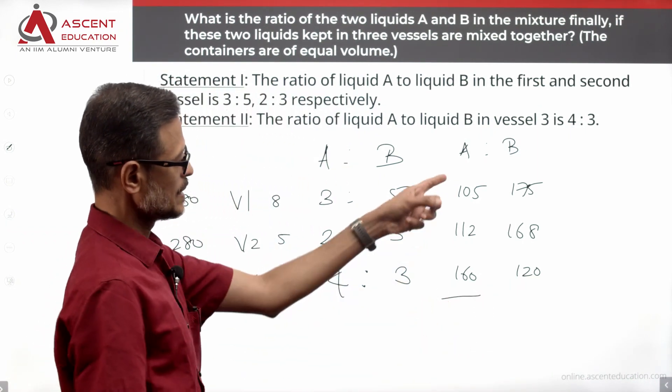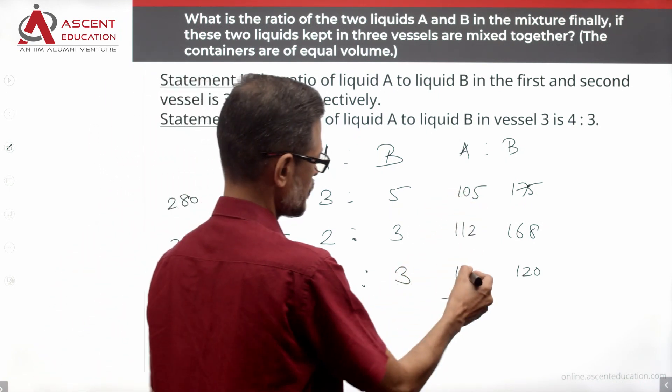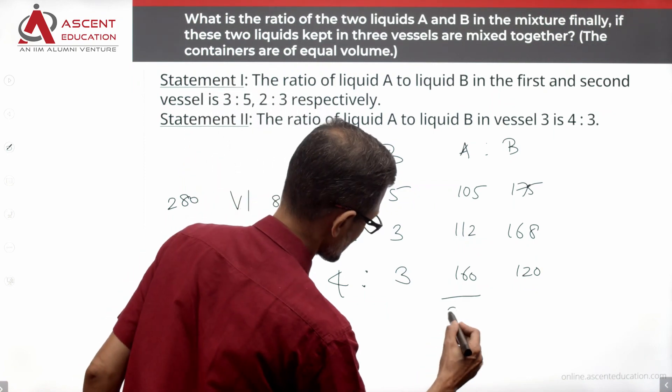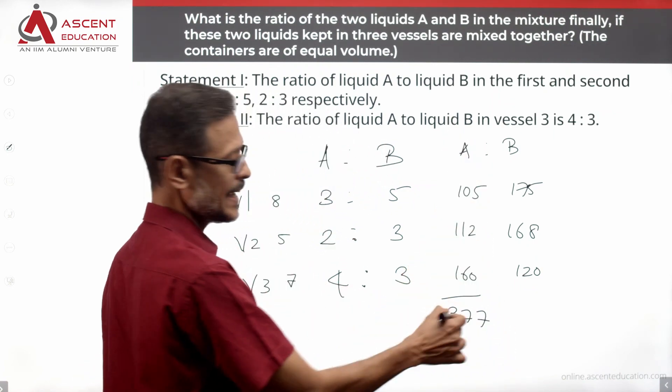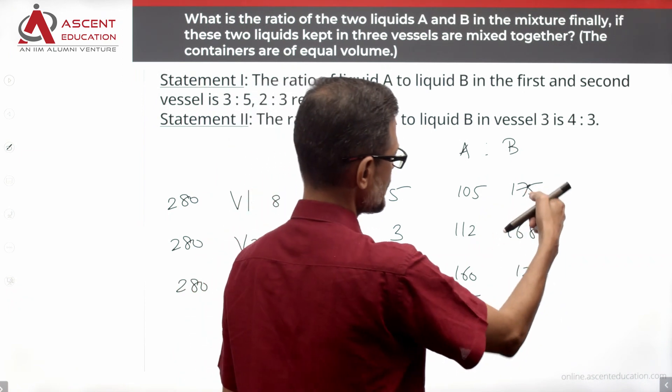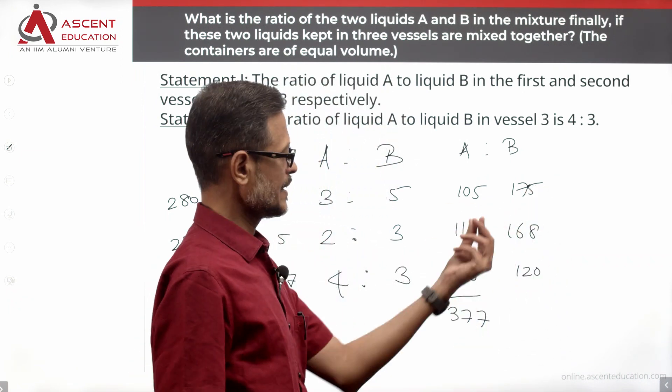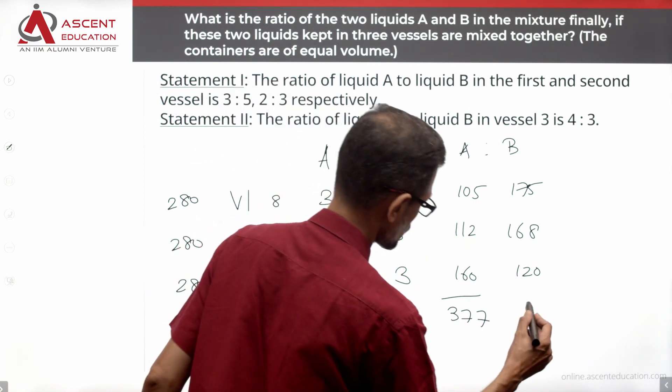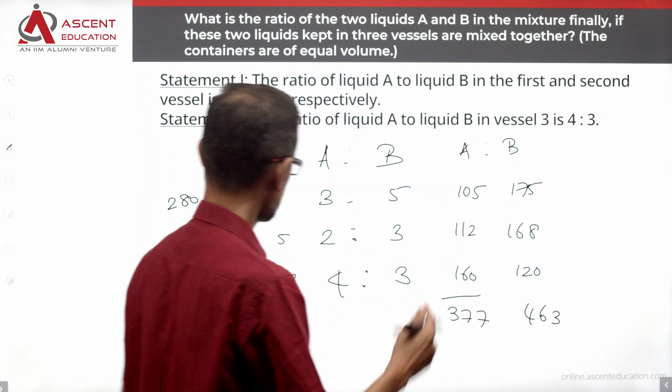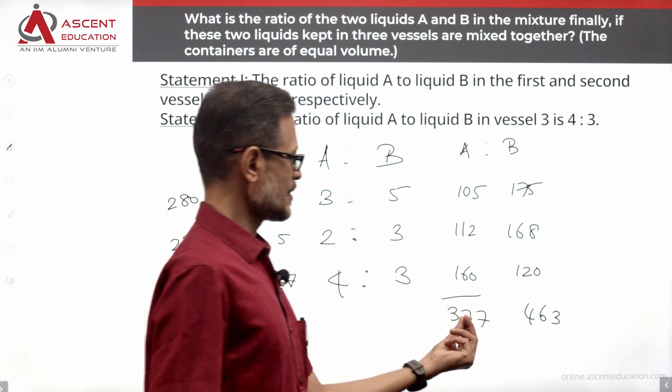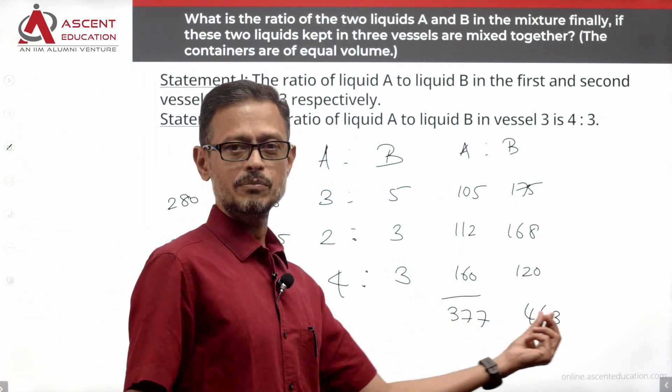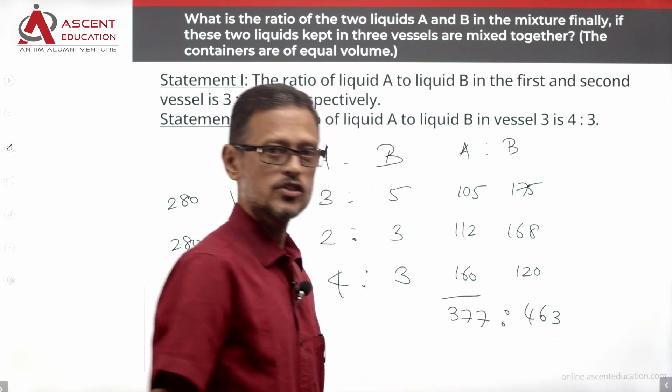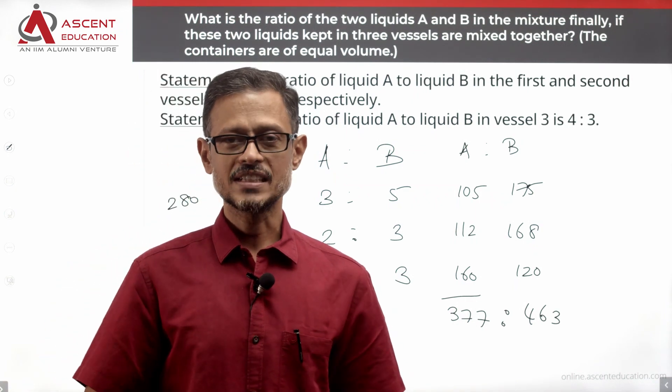A is available in these three vessels. So 105 plus 112 is 217, plus 160 is 377. That is the amount of A finally. B is available: 175 plus 168 is 343, plus 120 is 463. Total is 840. What is the ratio of A is to B in the final mixture? 377 is to 463 is the answer.